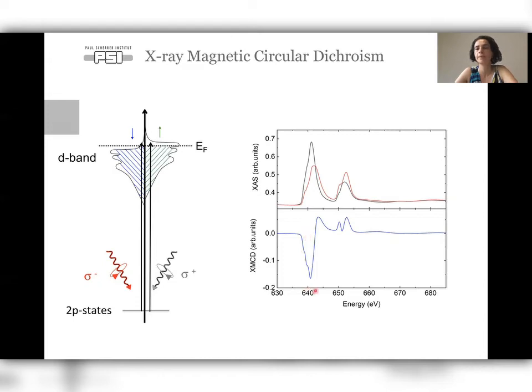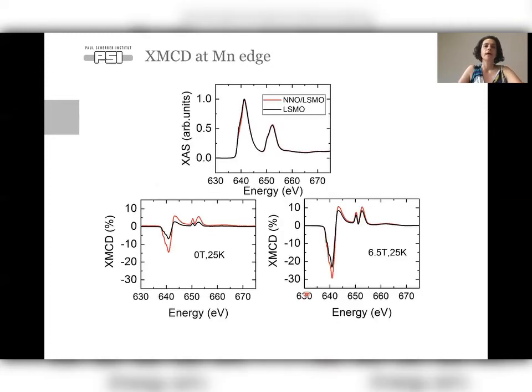And the XMCD signal is proportional to the magnetic moment on the absorbing atom. So in this case, it's proportional to the magnetic moment on manganese, and most importantly, the net magnetic moment on the direction of the X-rays. So if you have an antiferromagnetic system, there should be no XMCD signal, only in ferromagnets or paramagnets. So I start here with the manganese edge. We have here on top the XAS of a thick film of LSMO compared to the bilayer NNO-LSMO. And we see the XAS is similar, which means the valence state on manganese is similar in both systems.